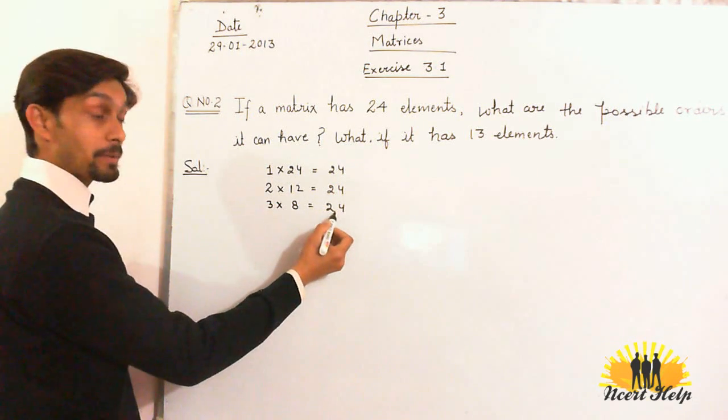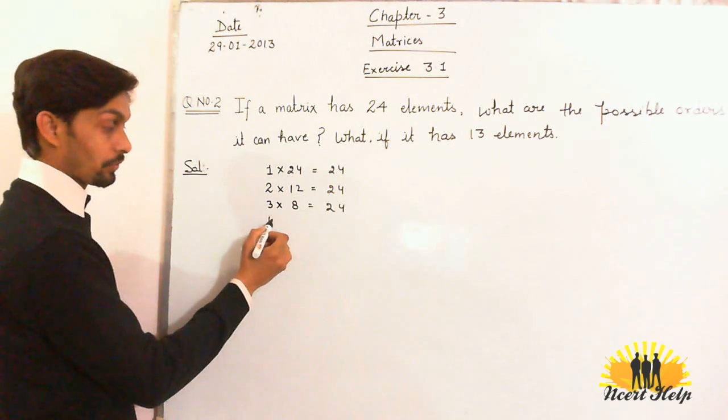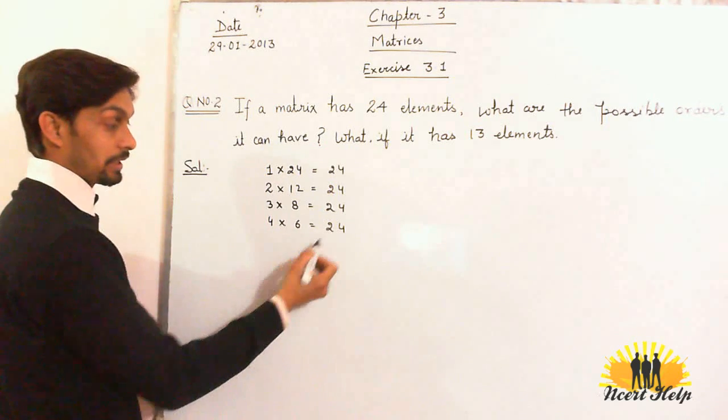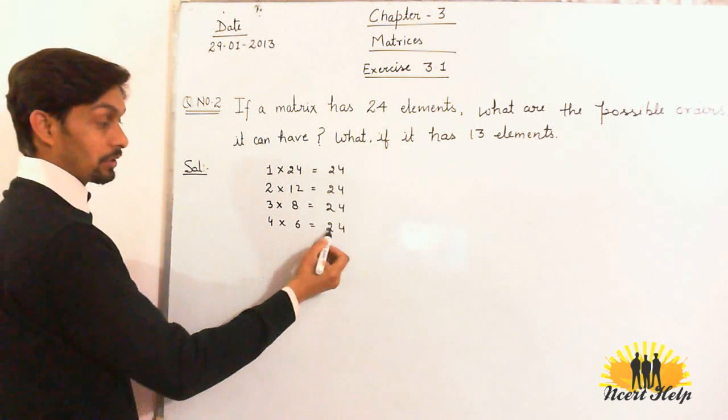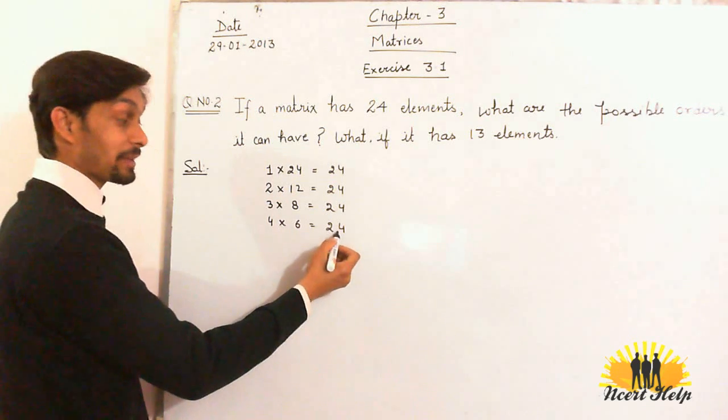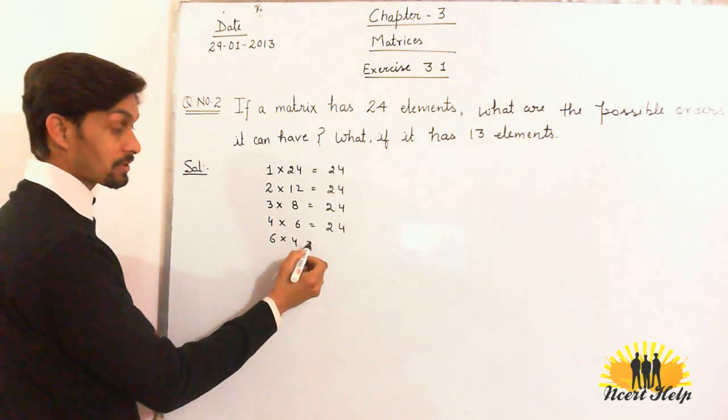And it is also divisible by 4. 4 into 6 equals 24. Now 5, it is not divisible by 5. Again, it is divisible by 6: 6 rows into 4 columns.